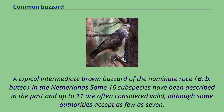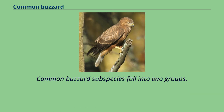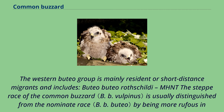Some 16 subspecies have been described in the past and up to 11 are often considered valid, although some authorities accept as few as 7. Common buzzard subspecies fall into two groups. The western Buteo buteo group is mainly resident or short-distance migrants and includes Buteo buteo rothschildi. The steppe race of the common buzzard is usually distinguished from the nominate race by being more rufous in coloration.